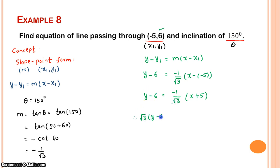Now we simplify. √3y - 6√3 = -x - 5. Moving all terms to one side: x + √3y - 6√3 + 5 = 0, which gives x + √3y + 5 - 6√3 = 0. This is your final answer.